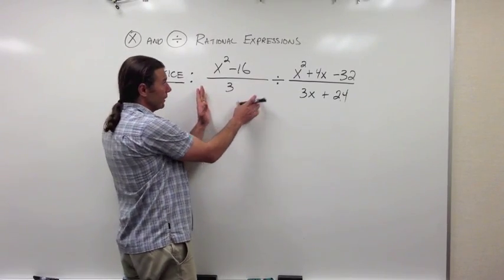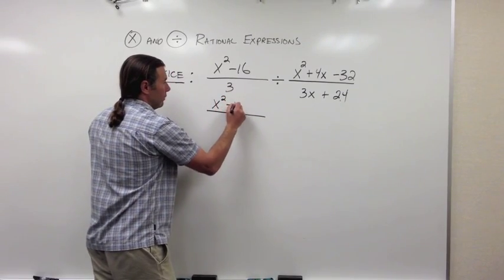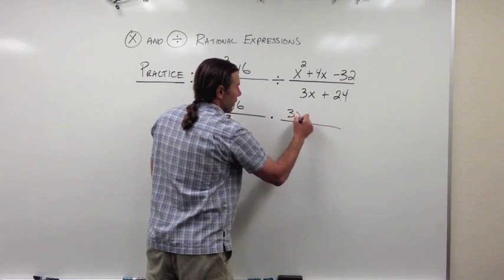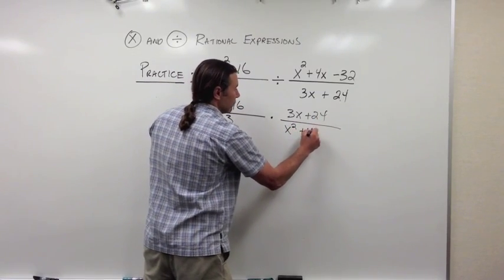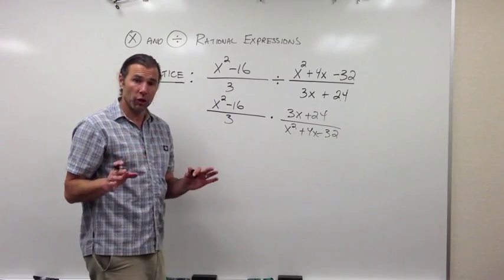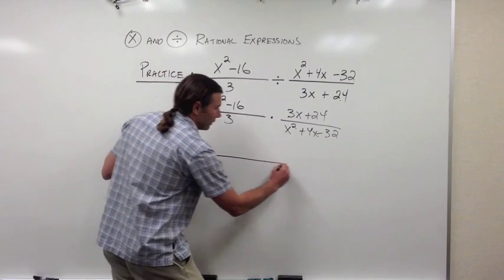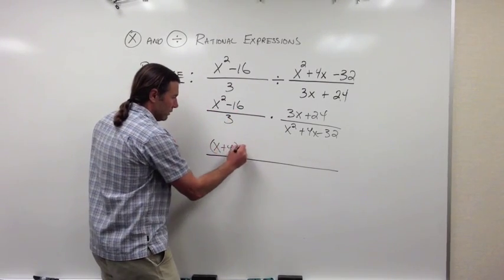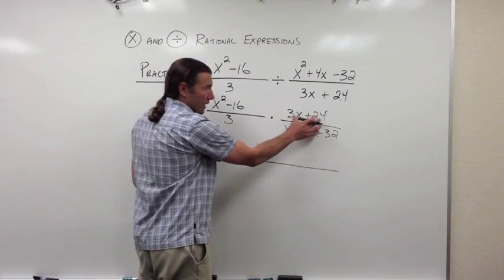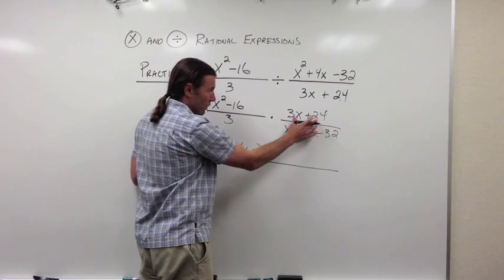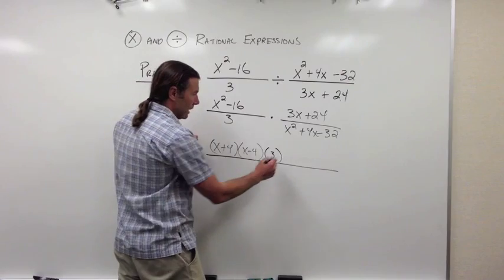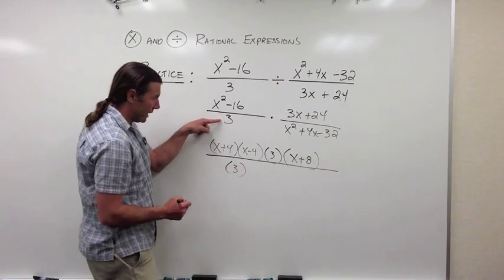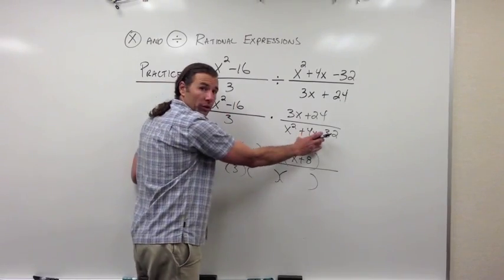Looking at the practice problem, we have a division problem, so I want to change it to multiplication. The first rational expression stays the same, and we flip the second one — that gives us 3x + 24 over (x² + 4x − 32). Once written as multiplication, I factor everything out into one big fraction bar. x² − 16 is a difference of squares, so it factors into (x + 4)(x − 4). Then 3x + 24 has a GCF of 3, giving 3(x + 8).